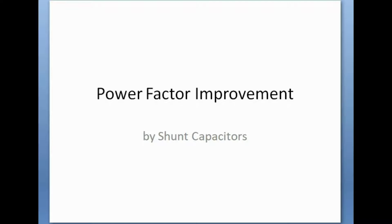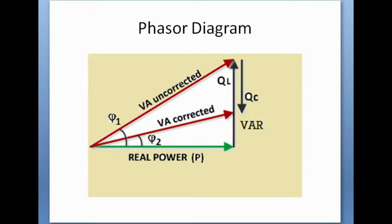Power factor improvement in a power system network is a very important factor. We will discuss the advantages of power factor improvement shortly. If we look at the phasor diagram of a power system network, Phi 1 represents the power angle between voltage and current before power factor correction. In normal condition, cos Phi 1 equals KVA divided by real power in kilowatts.